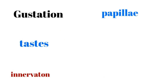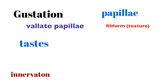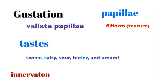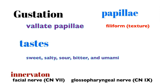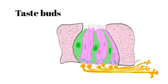Now let's talk about gustation, which is the taste sensation. There are roughly 4,000 taste buds throughout the tongue. The main type I want to discuss are the vallate papillae, which contain about 250 different types of taste buds. The filiform papillae detect texture rather than taste. The different types of tastes we can sense are sweetness, salty, sour, bitter, and umami — the ability to taste meat or amino acids. Innervation of the tongue's taste buds is achieved via the facial nerve (cranial nerve 7), the glossopharyngeal nerve (cranial nerve 9), and the vagus nerve (cranial nerve 10).